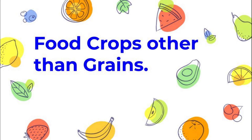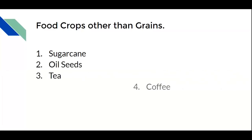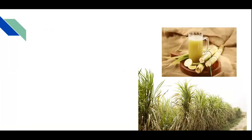Today we are going to talk about food crops other than grains in India. They are sugarcane, oil seeds, tea, coffee, and horticulture crops. We are going to discuss all of these in this chapter. So let's start with sugarcane — sugarcane is mainly a tropical as well as subtropical crop.